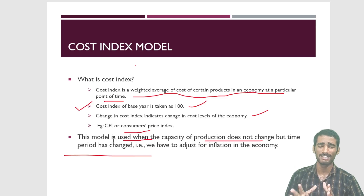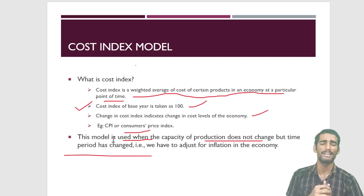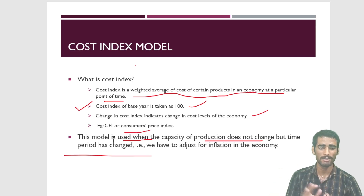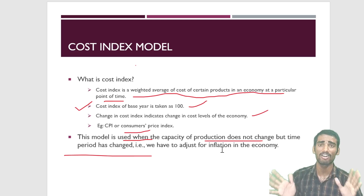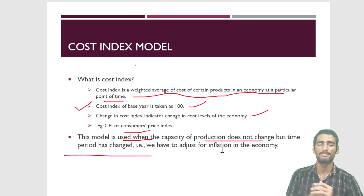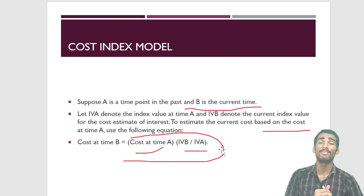For the cost index model, the time period changes but the capacity of production remains the same. Remember that the cost index for the base year is 100. If a question does not mention the base year value, consider it as 100. The formula is: Cost at B = Cost at A × (I_B / I_A). This model is used when capacity is not changing but time period is changing.